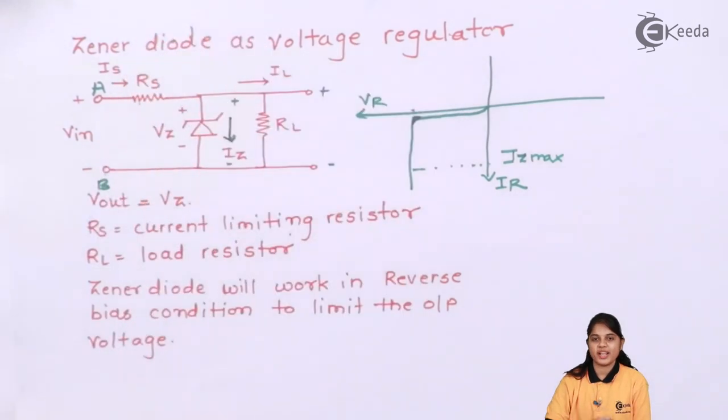If you want to regulate your voltage at some given point, at some certain value, then you can use a Zener diode to limit that voltage.